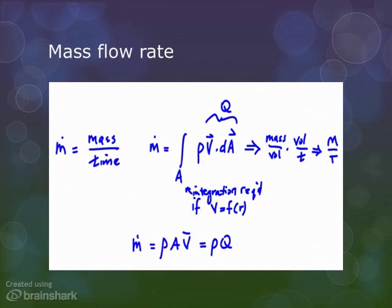So, mass flow rate we abbreviate as m dot. The little dot on top of the m indicates per time. What's the difference between a mass flow rate and discharge? It's the density.